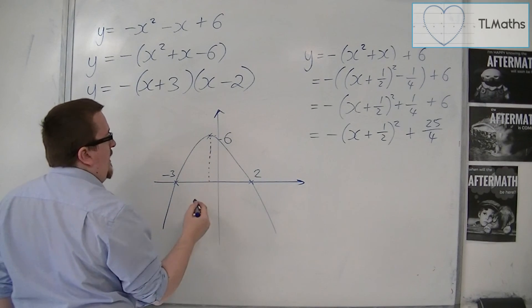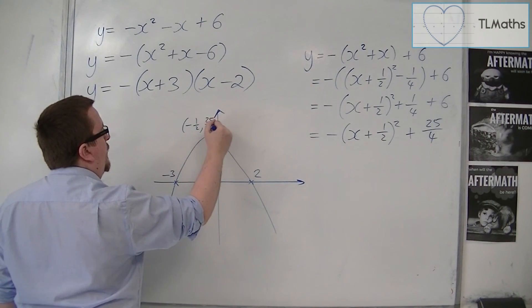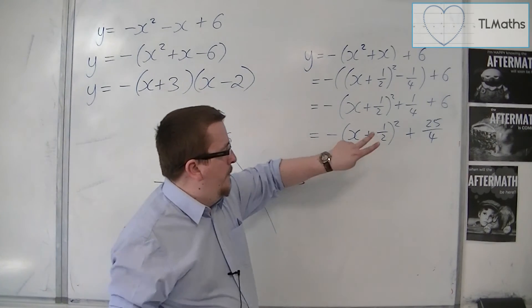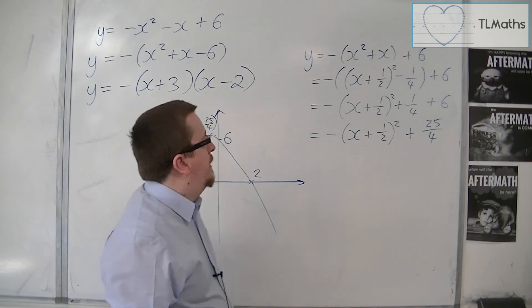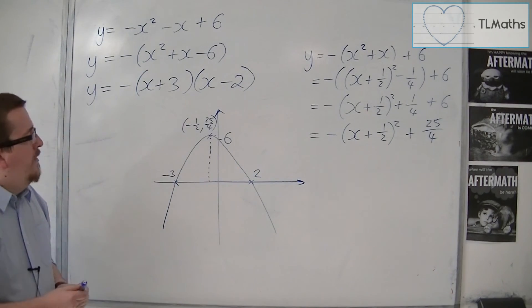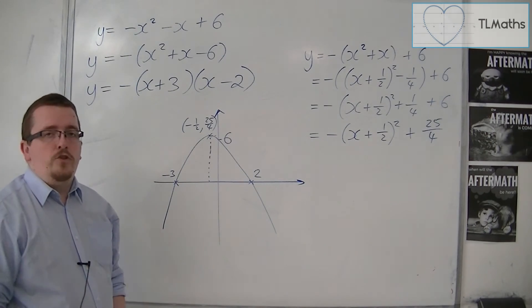So the vertex is found at minus a half, 25 quarters, as read off from the negative of what's inside the bracket, and whatever is outside as the y-coordinate. And that is y equals minus x squared minus x plus 6, completely sketched.